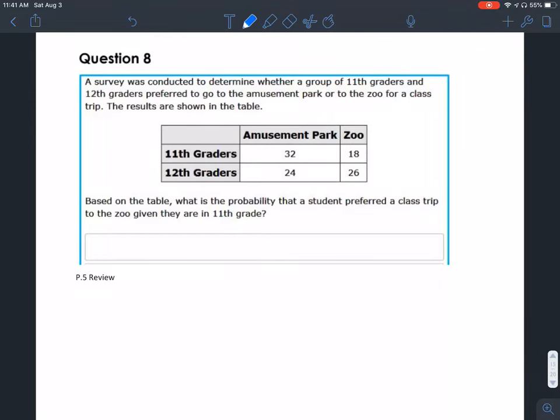Question number eight from the Geometry Ohio Spring 2019 release questions. A survey was conducted to determine whether a group of 11th graders and 12th graders preferred to go to the amusement park or the zoo for a class trip. The results are shown in the table.